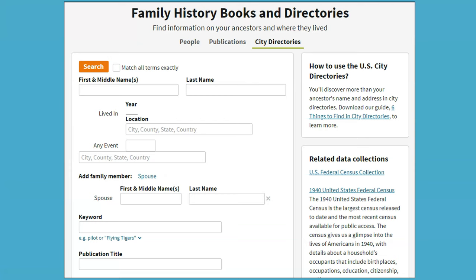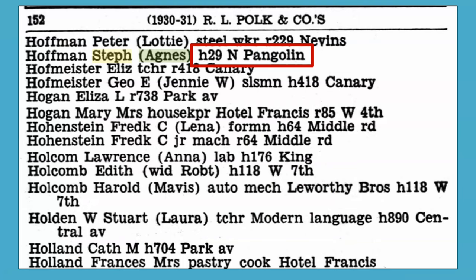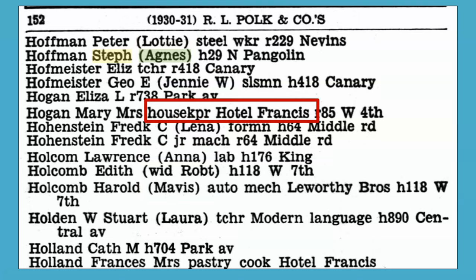Heritage Quest has thousands of full-text books including city directories, which are very similar to telephone books. Here's an entry for the Hoffman family — you can see they're at 29 North Pangolin Street and it lists both Stephen and Agnes. Addresses and later telephone numbers were published. Spouses' names are in some directories; usually the head of household was listed and the spouse's name was in parentheses. Or if a woman was a widow, you might see WID for widow and then the first name of her deceased husband. Profession and sometimes the name of the employer are also included.